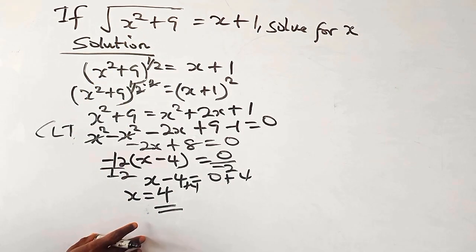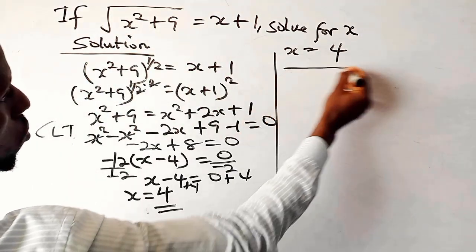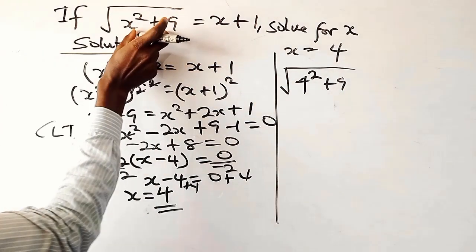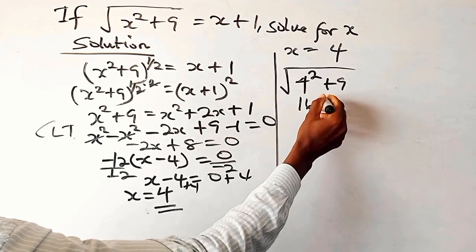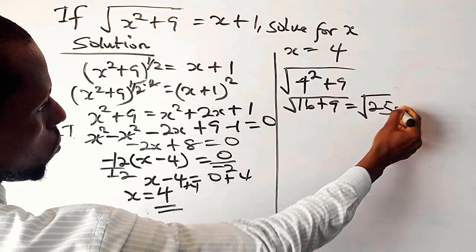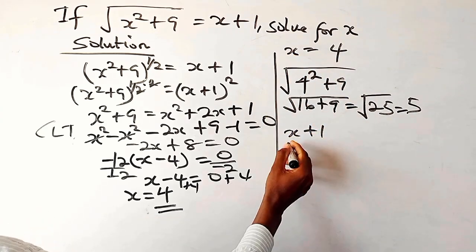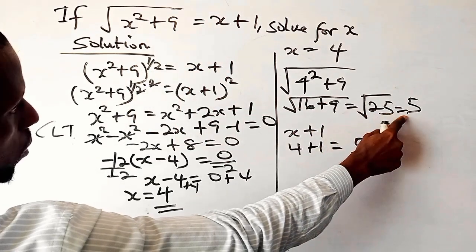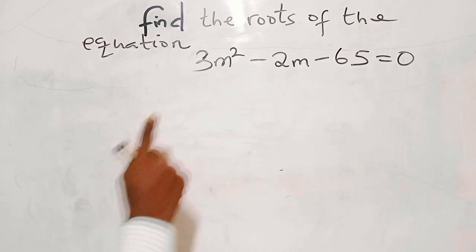Let us verify for x equals 4. Coming back to the equation, we have square root of 4 squared plus 9. On the left-hand side: 4 squared is 16, plus 9, gives square root of 25, which is 5. For the right-hand side, x plus 1 equals 4 plus 1, which is 5. Left-hand side equals right-hand side, so x equals 4 is confirmed.